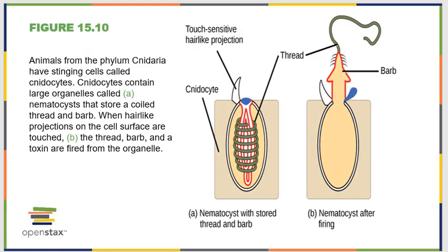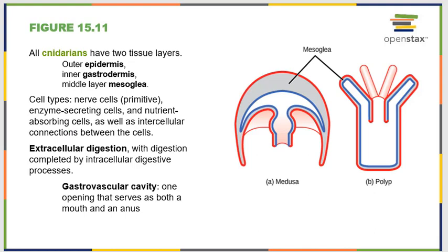The next phylum to discuss is phylum Cnidaria. Cnidarians are well known because they have stinging cells called cnidocytes. Cnidocytes contain a really large organelle called a nematocyst, which has a coiled thread with a sharp barb. When you brush the hair-like projections on top of the cnidocytes, the nematocyst springs out and stabs you. If you've ever been struck by a jellyfish, that's what was happening to you.